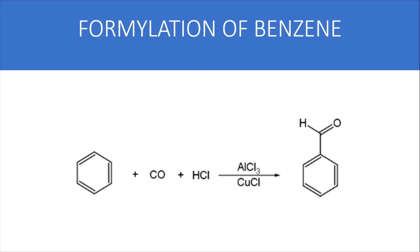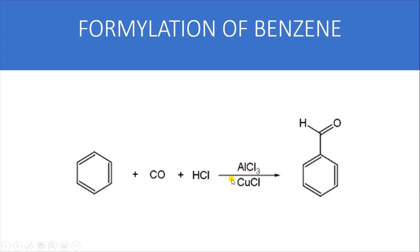Here is the formylation of benzene — this is an electrophilic substitution reaction which is part of your course content. First, we need to create a formyl group, so CO plus HCl is used to create formyl chloride. This is done in the presence of a Lewis acid such as aluminum chloride, which polarizes the bond.